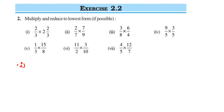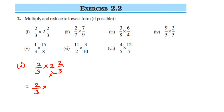First question: we have 2/3 multiplied by 2²/3. You can see we have a mixed fraction here. We have to first convert the mixed fraction into an improper fraction and then multiply. So this is equal to 2/3 multiplied by — when opening this mixed fraction, multiply the denominator and the whole number first: 2 × 3 = 6, then add the numerator: 6 + 2 = 8, so we get 8/3.